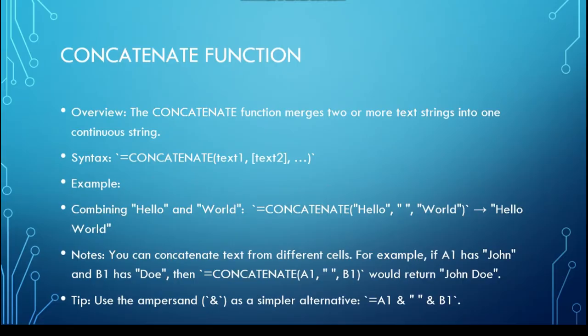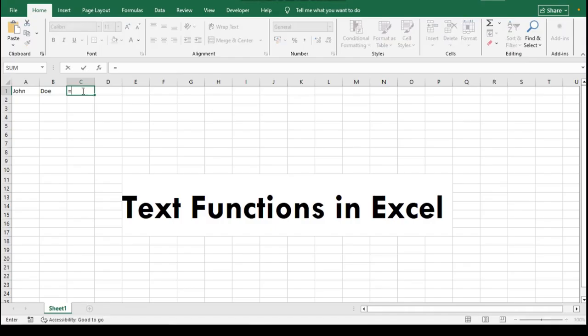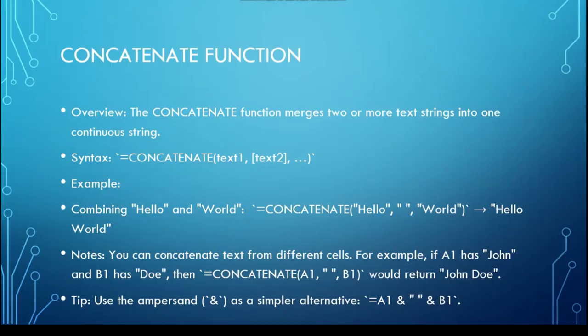combining hello and world gives you hello world. You can concatenate text from different cells easily. If cell A1 has John and cell B1 has Doe, then using CONCATENATE will return John Doe. A handy tip is to use the ampersand as a simpler alternative for combining text strings.